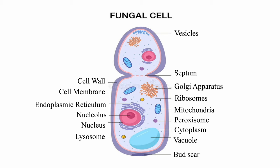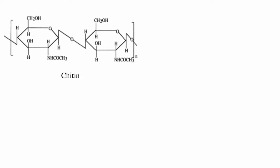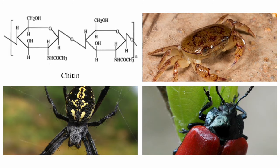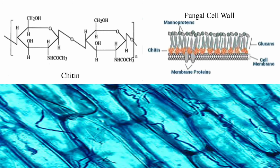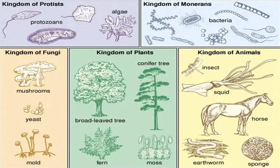Each fungus begins with a cell — a eukaryotic cell with a complex structure. Starting with the cell wall, fungi are primarily made of chitin, a strong but flexible polysaccharide. Chitin is also found in the exoskeletons of arthropods, such as insects, spiders, and crustaceans. The cell wall is different from the cell wall of plants, which are primarily made of cellulose. The unique structure of the fungal cell wall is one of the features that helps scientists distinguish fungi from other kingdoms.